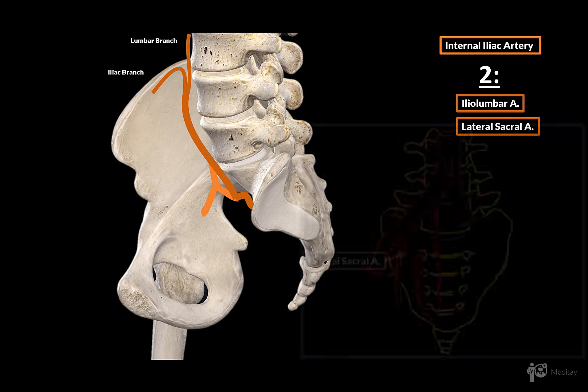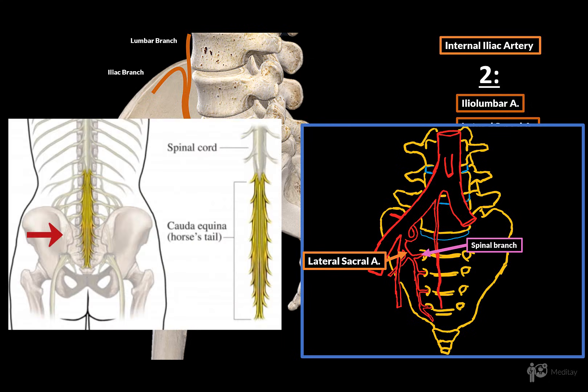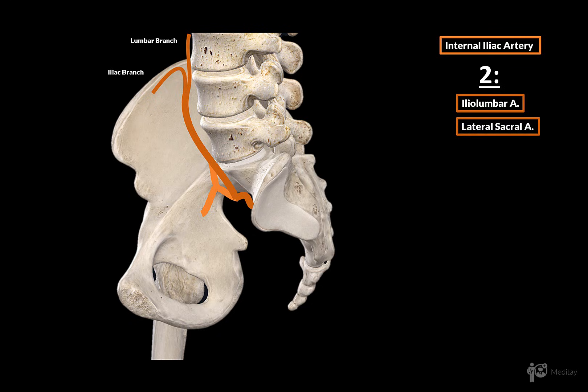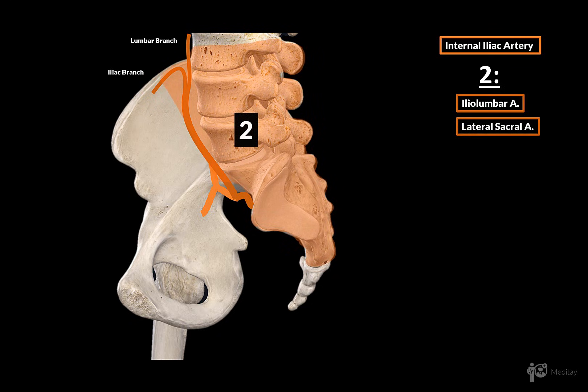The other branch going to the posterior body wall is the lateral sacral artery. It descends along the anterior wall of the sacrum to supply the muscles of the pelvic girdle and the peritoneum. It gives off spinal branches which go through the anterior sacral foramen to enter the sacral canal and supply the cauda equina. It keeps going downwards to supply the perineum.